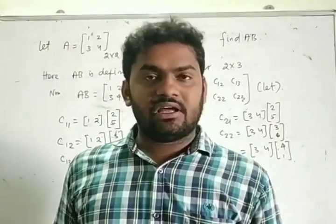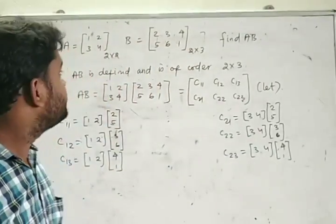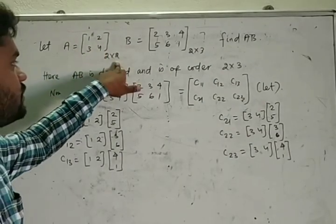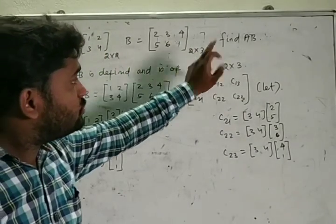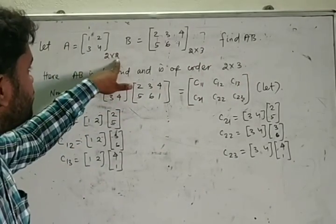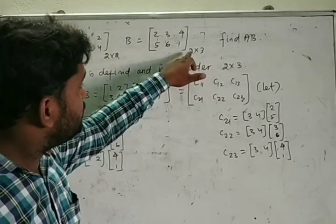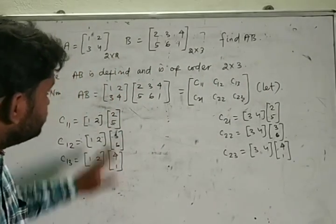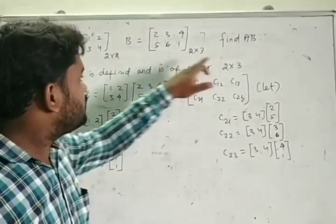Let's see an example of how to find the product of two matrices. Here A is a matrix of order 2×2 with elements 1, 2, 3, 4, and B is a matrix of order 2×3. The number of columns of A equals 2 and the number of rows of B equals 2, so the product AB is possible and is defined as a matrix of order 2×3.